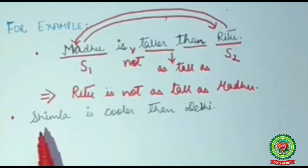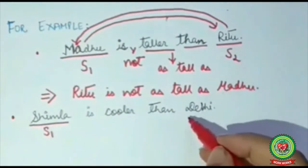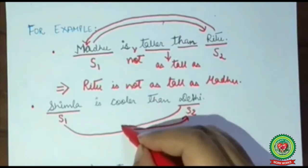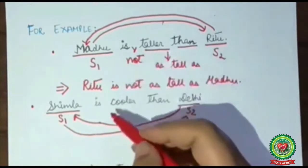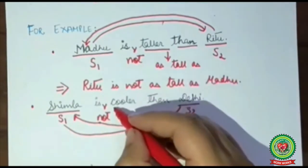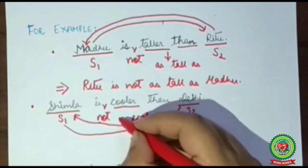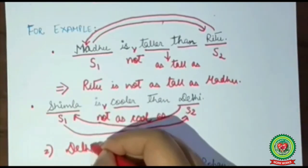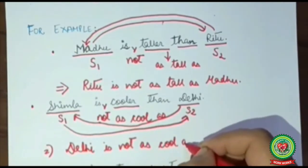Next example: 'Shimla is cooler than Delhi.' Shimla is subject one, Delhi is subject two, so they swap positions. It is a positive sentence, so we will add 'not' after the helping verb. 'Cooler' will change into 'cool', and the bodyguard 'than' will change into 'as cool as'. So the answer would be: 'Delhi is not as cool as Shimla.'